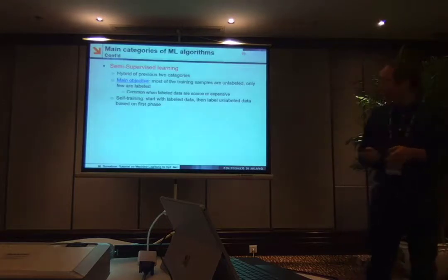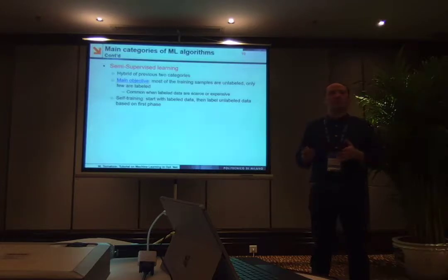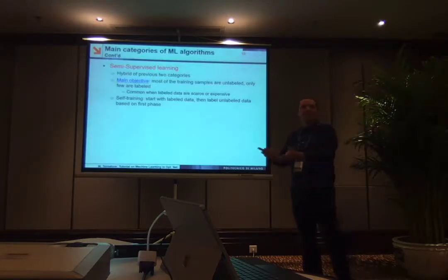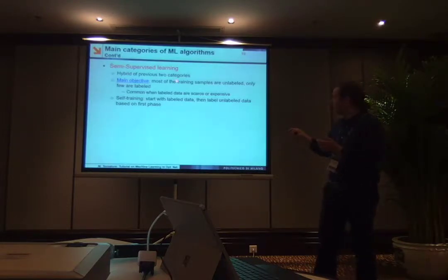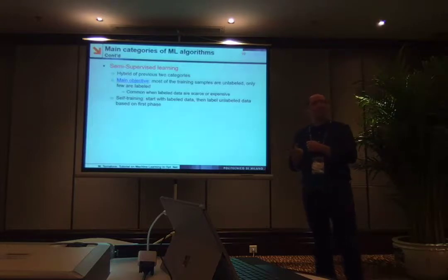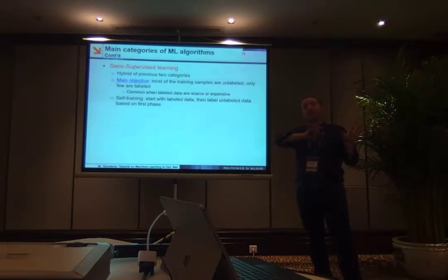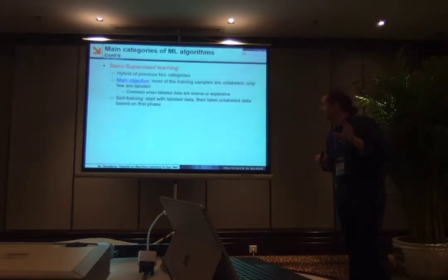There are two other main families: semi-supervised learning and reinforcement learning. In semi-supervised learning, you do a hybrid approach. You start with supervised learning because you have some data available, but when you run out of labeled data you switch to unsupervised. This makes a lot of sense in the context of failure recovery in optical networks, where some failures are known historically — supervised — and some failures have never appeared in your network before — so you use unsupervised.